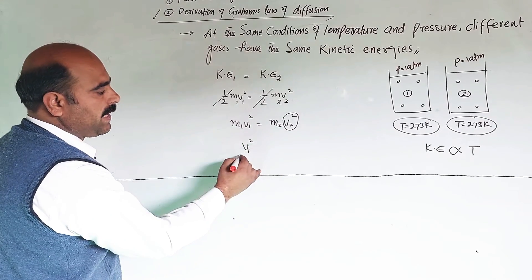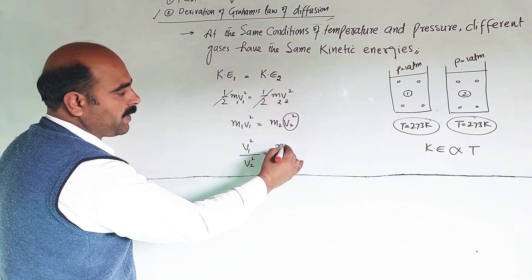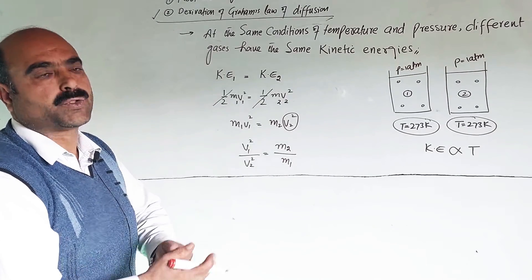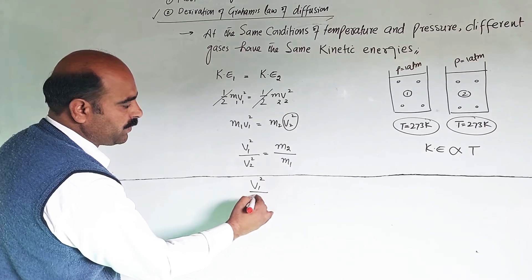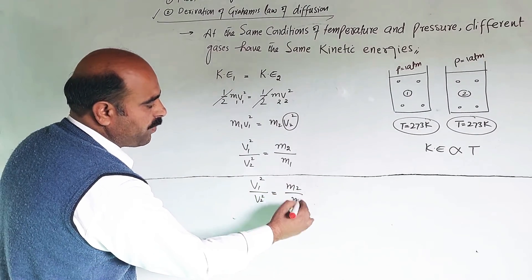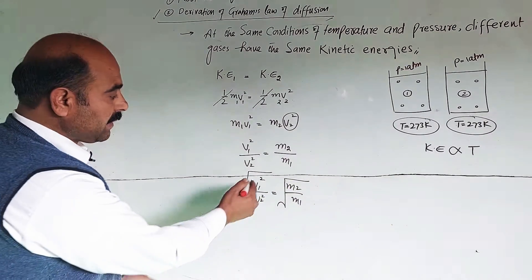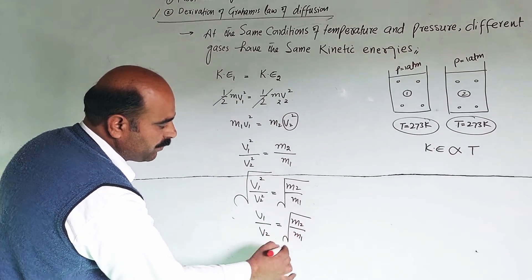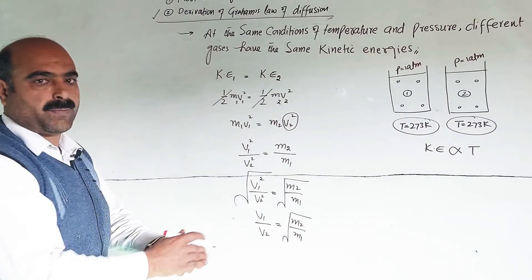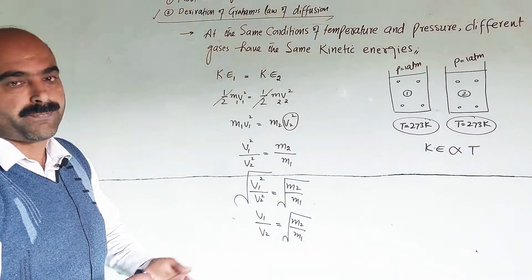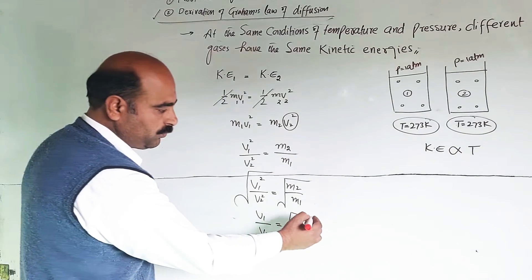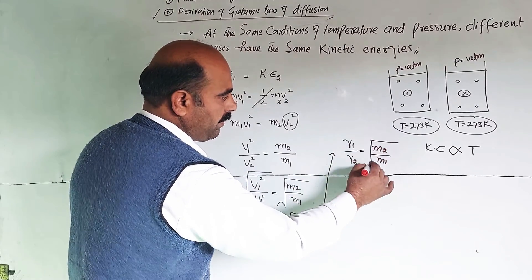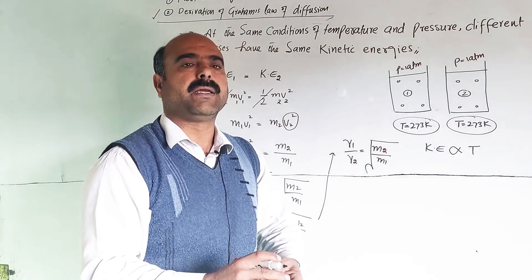Rearranging m1v1² = m2v2²: divide both sides, giving v1²/v2² = m2/m1. Taking square root of both sides: v1/v2 = √(m2/m1). Since the rate of diffusion of a gas depends on its molecular velocity, v1 and v2 can be replaced by r1 and r2. Therefore: r1/r2 = √(m2/m1).